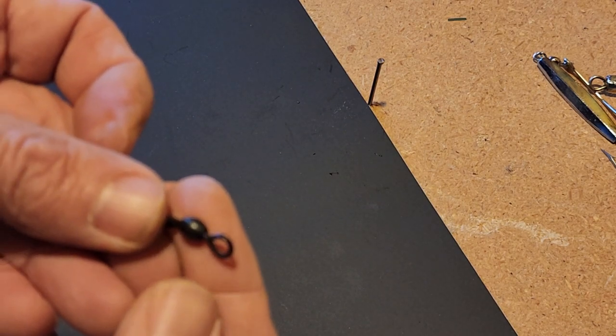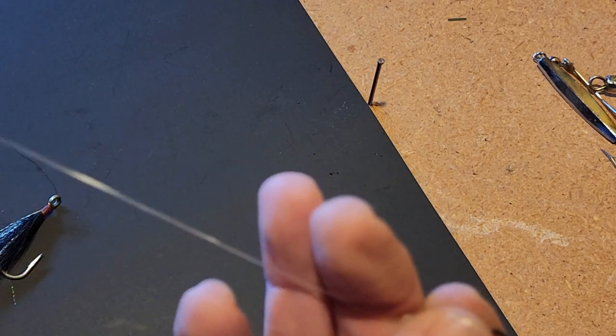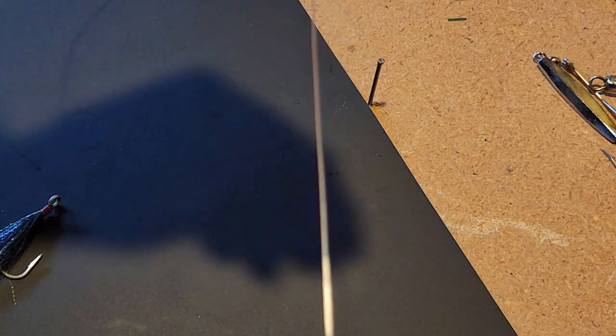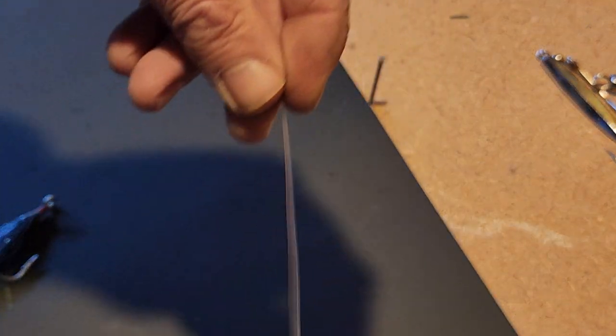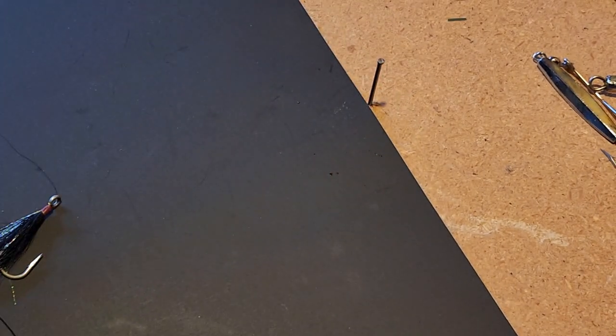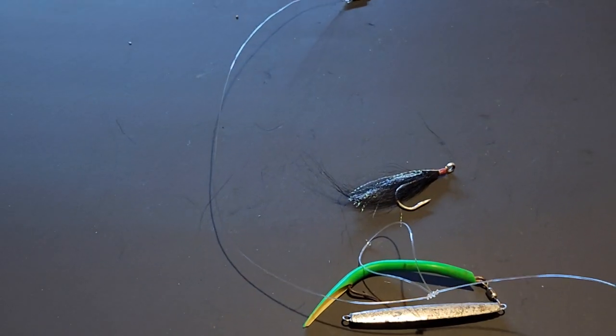Now I've got the barrel swivel to my main line. I've got about a foot of leader. I come up to my dropper loop. And then I come up to my tactical clip. And then what it will look like when it's all done. I'm going to pan this out a little bit.